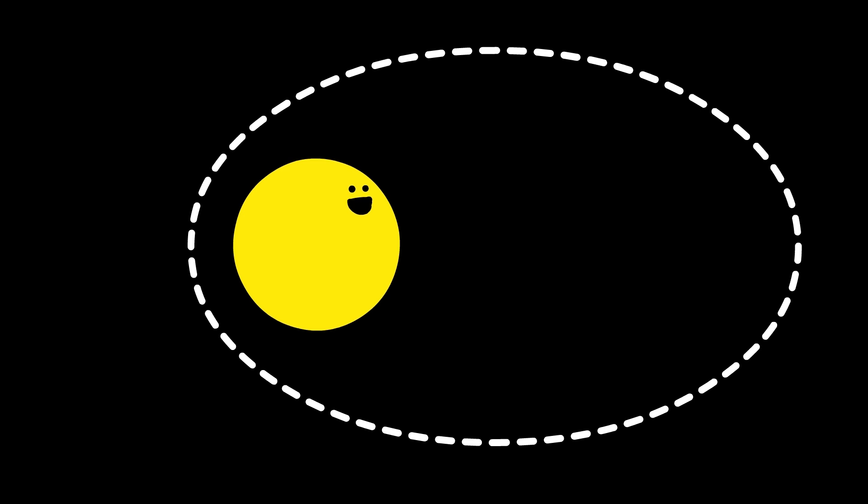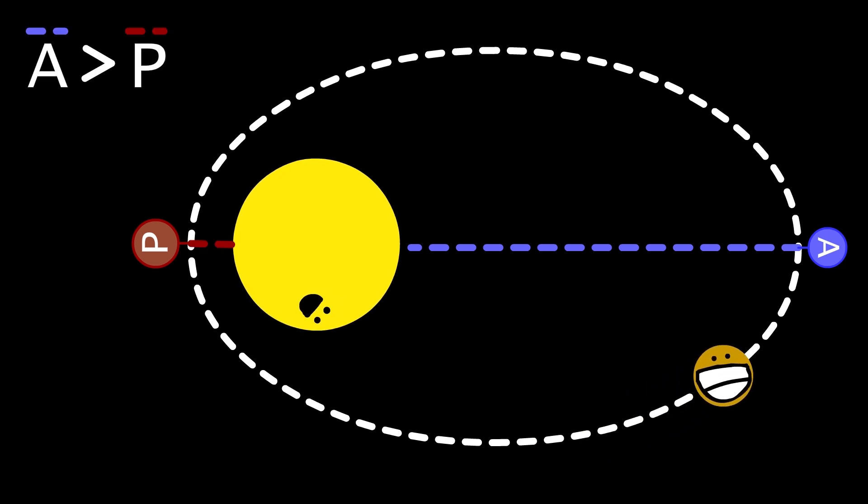In an elliptical orbit, an object orbits a body with a changing altitude and velocity on a path in the shape of an oval. An elliptical orbit has an apoapsis and a periapsis. The apoapsis is the furthest point an object is orbiting a body, and the periapsis is the closest point.